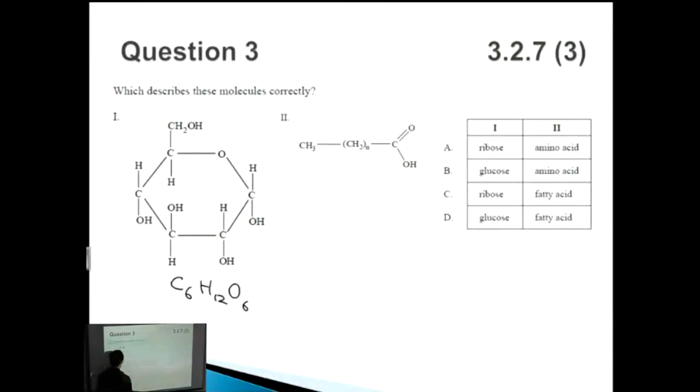Which is our chemical formula for glucose. So straight away we know that one is glucose. We can rule out A and C. So it's either one of these two.